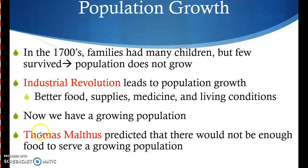Because of the Industrial Revolution, we have a growing population. All of a sudden, these families start having 6, 7, 8, 9 kids and keep having 6, 7, 8, 9 kids, because that was their norm. And because of that, we have population growth. Population increases.